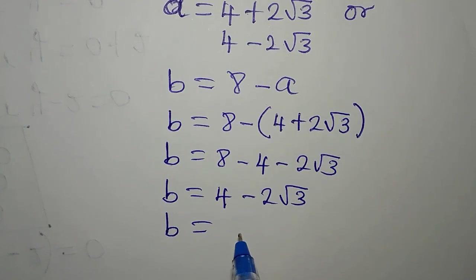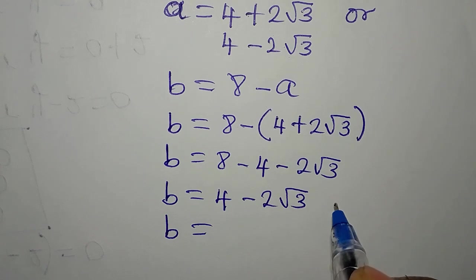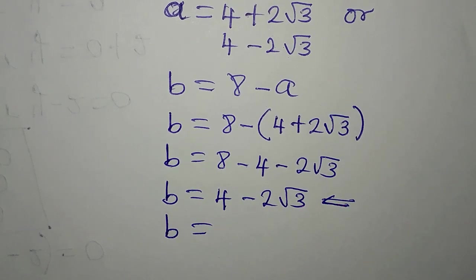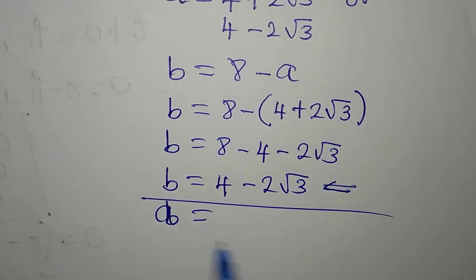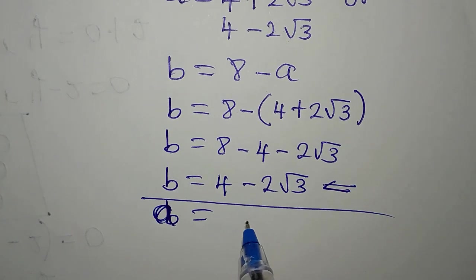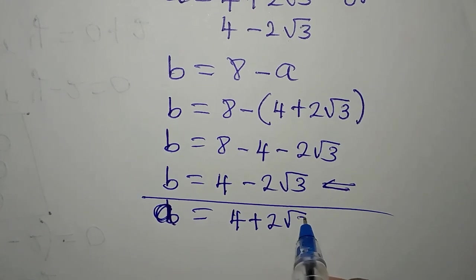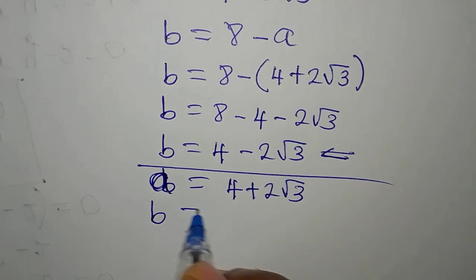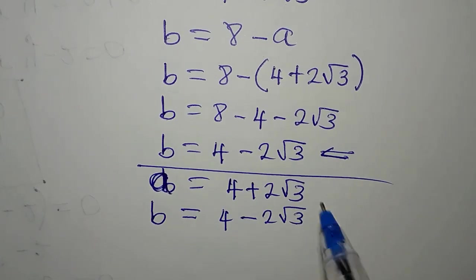So we have B to be equal to 8 minus 4 is 4 minus 2 root 3. So that B is equal to what we have here. So we already have this. Let's take note. So this is the value of B. Now, what do we do? When A equals 4 plus 2 root 3, what is the value of B? Our B is equal to 4 minus 2 root 3.